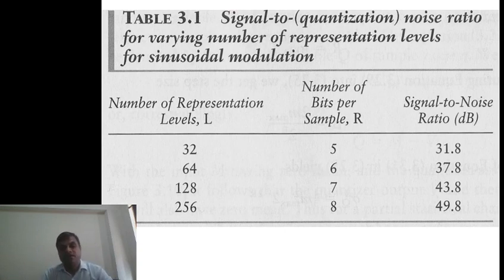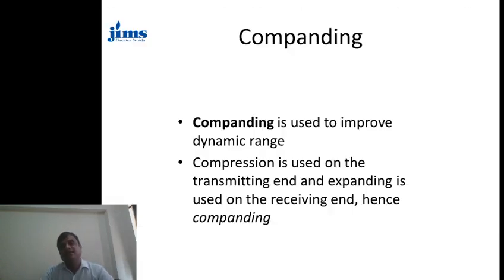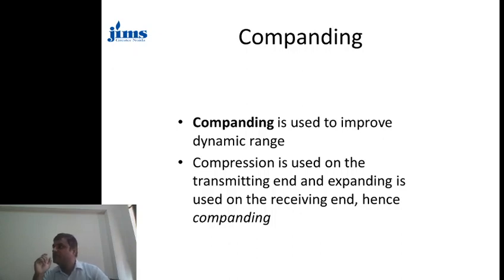These are some representations: if the number of levels is 32, the number of bits per sample R equals 5 (since 2 to the power 5 equals 32), and the signal to noise ratio has been calculated and tabulated for different values for convenience. Our second process is called companding, which is also required to improve the dynamic range of the signal. If the level of the signal is small but the sampling step size is large, the signal cannot be recognized by the sampler, resulting in a loss of information.